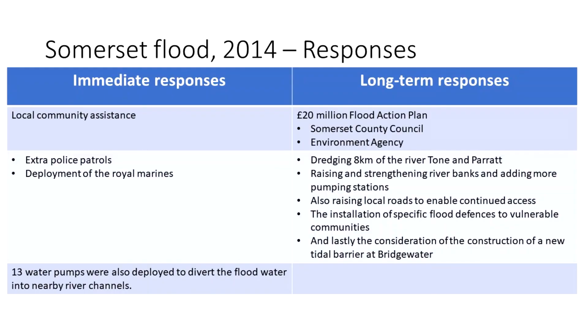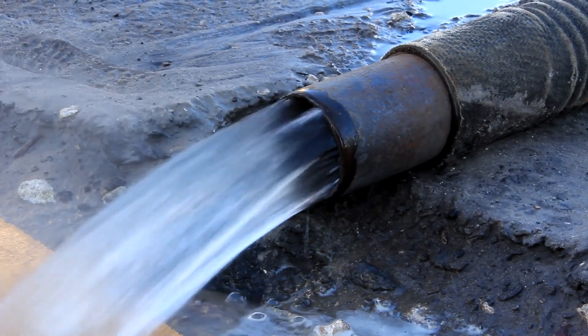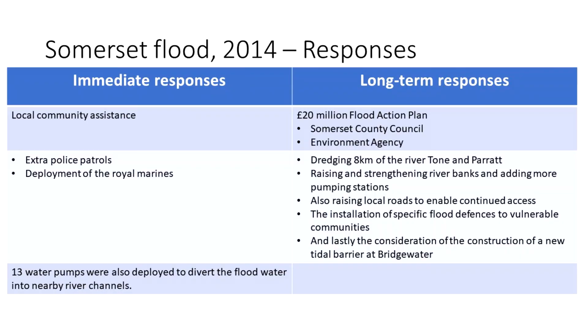The responses to the Somerset floods included the local community providing assistance and support, extra police patrols, and the deployment of the Royal Marines. Thirteen water pumps were brought in to divert water back into nearby river channels. The main long-term response was a £20 million flood action plan, with Somerset County Council working together with the Environment Agency, covering dredging of local rivers, raising river banks, raising local roads, installing flood defences, and considering a new tidal barrier at Bridgewater.